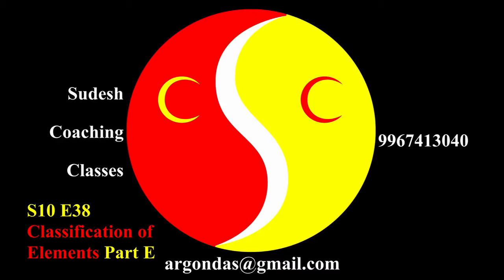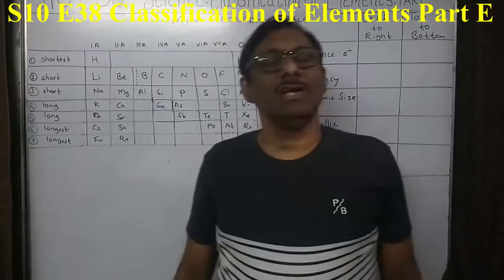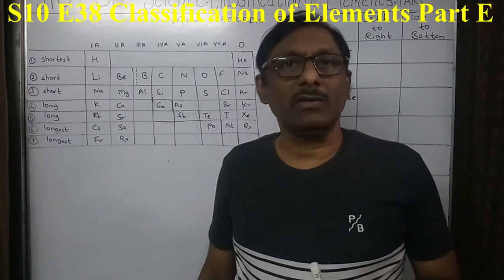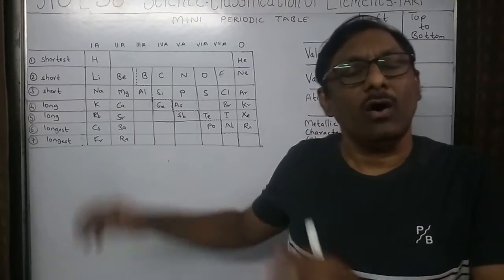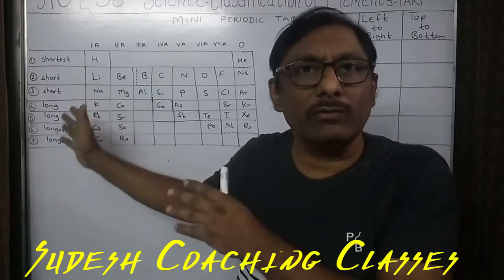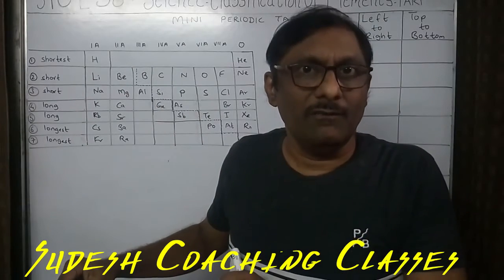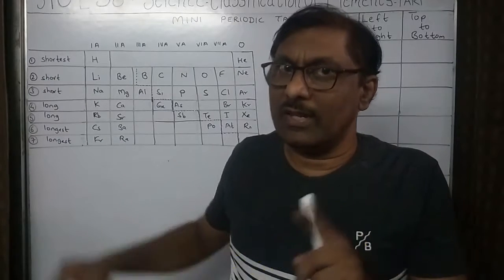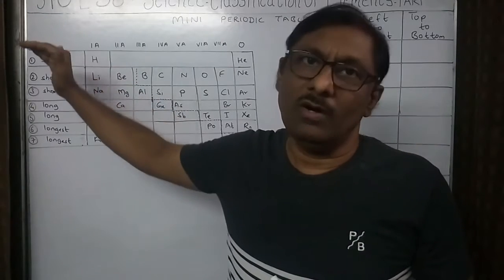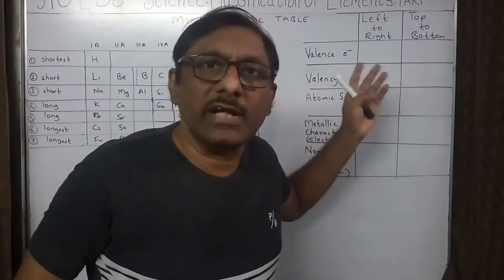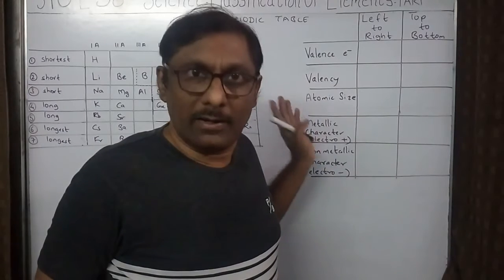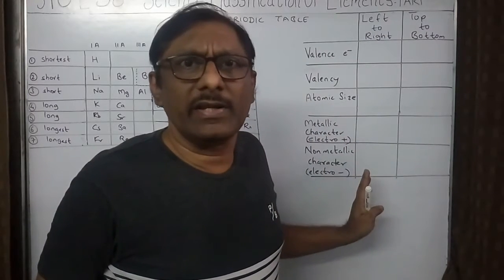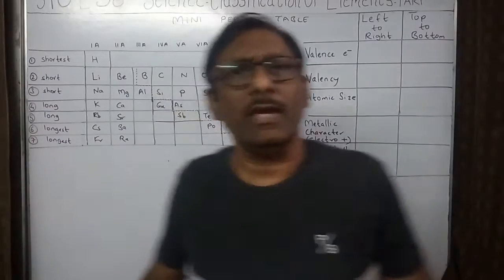Hello children, I am Sudesh sir from Sudesh Coaching Classes. We are coming to the very final part of our lesson. I have shown you the mini periodic table with only group elements and all the periods from the first to the seventh. We are going to study it on different aspects: valence electrons, valency, electropositivity, electronegativity, and many other factors.